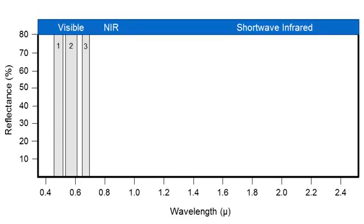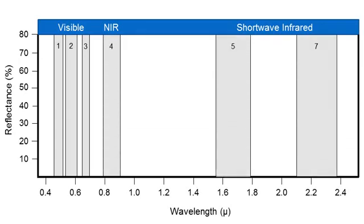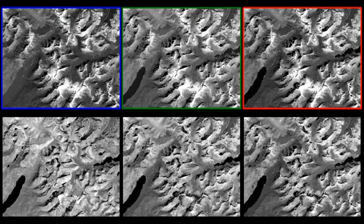Point-and-shoot cameras only capture three bands within the visible spectrum. However, Landsat satellites actually capture bands beyond the visible spectrum. Three additional bands we're going to focus on include band 4, 5, and 7 — the near-infrared (band 4) and the two short-wave infrareds (bands 5 and 7). The surface of the Earth reflects light energy in each one of these bands differently, as reflected in this array of images from Glacier National Park.